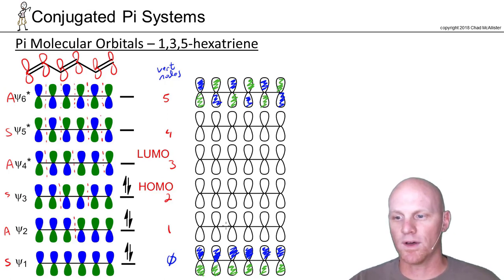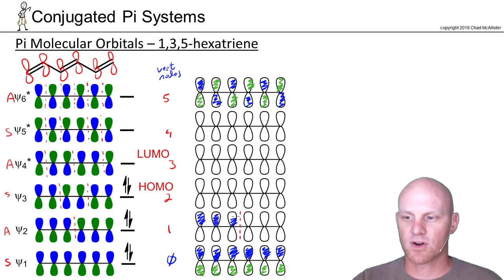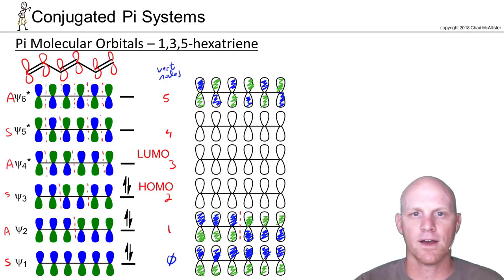So then we'll move on to psi 2. Psi 2 is going to have one node. And if you recall, when you have one node, for it to be symmetrically distributed, it has to be right down the middle. So that's where our node is going to be. So everywhere we don't cross a node, the wave functions are in phase. But cross that node, and you better switch so that they're out of phase.